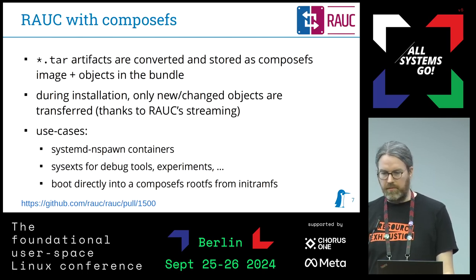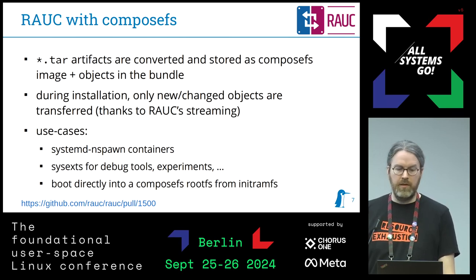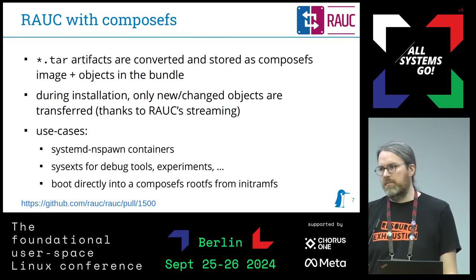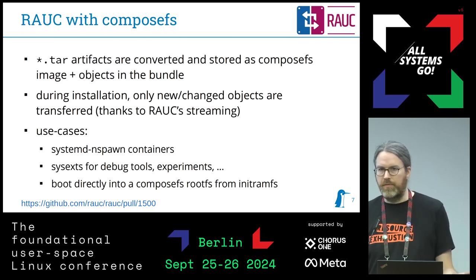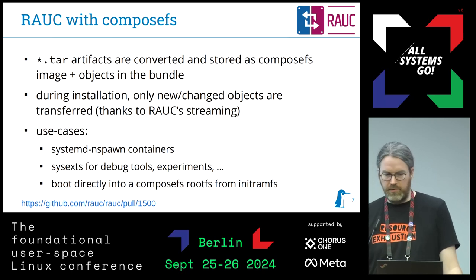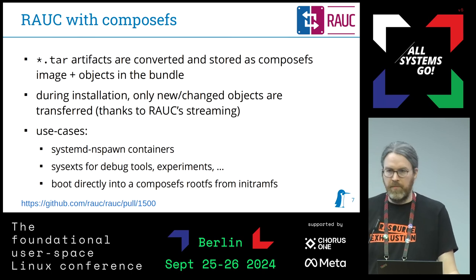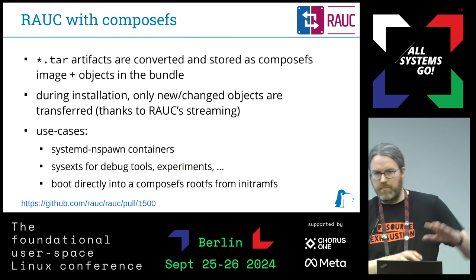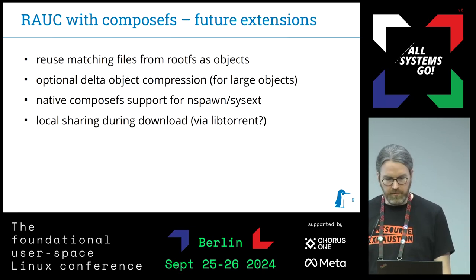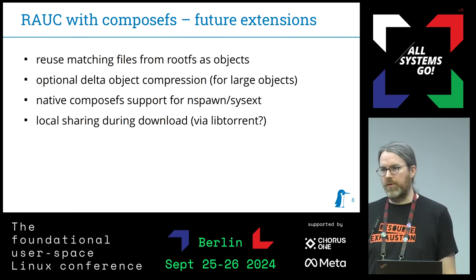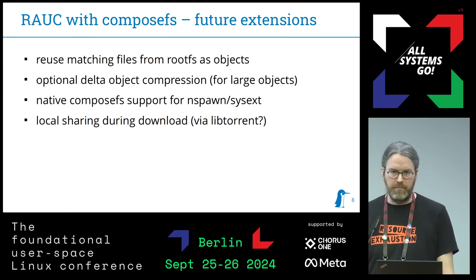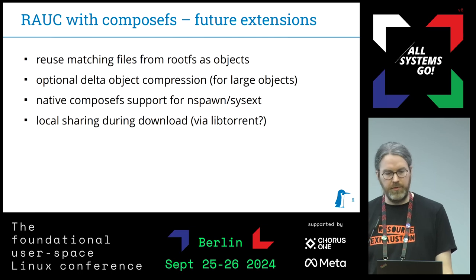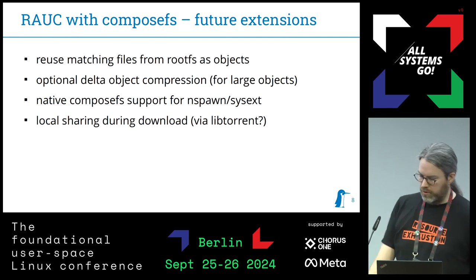In RAUC we basically integrate that into our bundle creation. You take a tar file for the artifact, it's automatically converted into ComposeFS, packed into the bundle, and during installation it's extracted as this metadata image plus object store, and you can just mount it via the ComposeFS tools. You can use it for systemd-nspawn containers, system extensions, local experiments, or you can do things like the Bootsy people do — take an initramFS which directly mounts this ComposeFS and boots into it without fetching from containers, though the use case is similar. Future plans include reusing matching objects from the root filesystem instead of downloading them if they have the same hash, sharing them with the page cache — just two object stores, one for the root filesystem and one in a writable integrity-protected partition. Data compression is also on the roadmap for later.